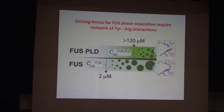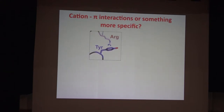The picture looks like this: the FUS prion-like domain has a saturation concentration up around 120 micromolar, but you can go down to really low concentrations when you think about the full-length protein. Quite a bit of detective work led to the idea that it was the tyrosines and the arginines. That suggests cation-pi interactions — but of course you can think of any number of cation-pi systems: lysine-tyrosine, arginine-phenylalanine, phenylalanine-lysine. Is there more to this than just cation-pi?